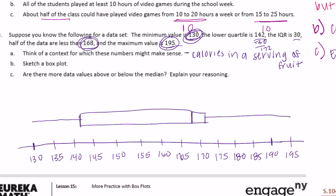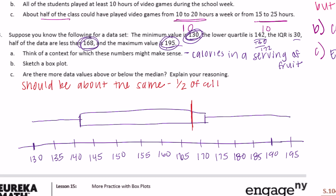Part C: are there more data values above or below the median? The median is the middle number, so there shouldn't be more above or below - it should be the exact middle. The answer is neither; there should be about the same. Half of all the data falls on each side of the median.